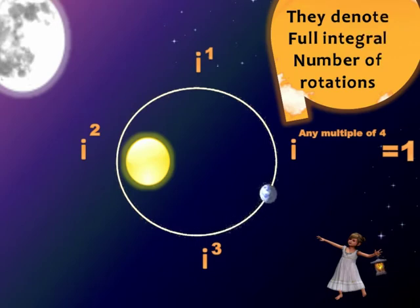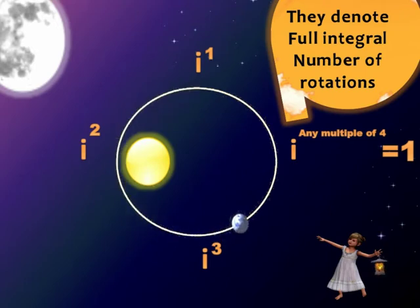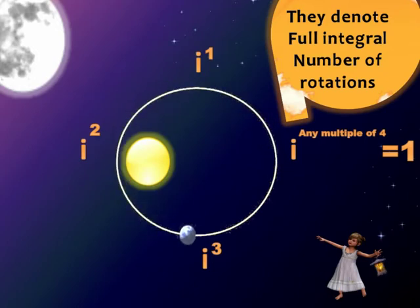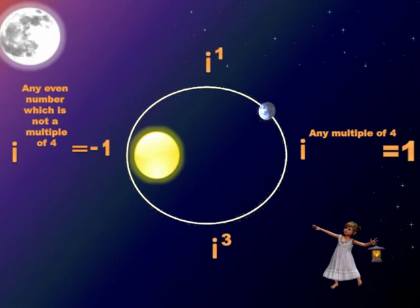As multiples of 360 degrees, they come back to square one. That is why i raised to 8, i raised to 12, i raised to 16, or even i raised to 400 — i raised to any multiple of 4 — will be equal to 1.